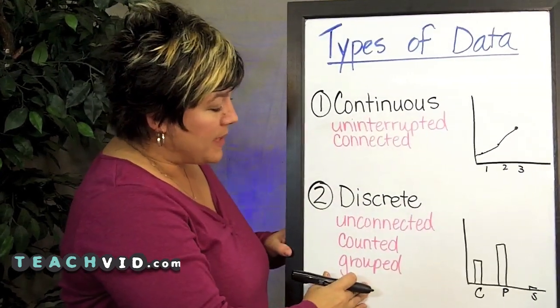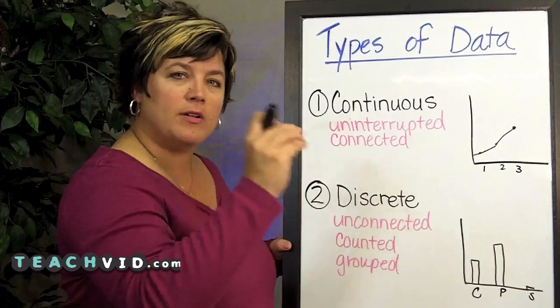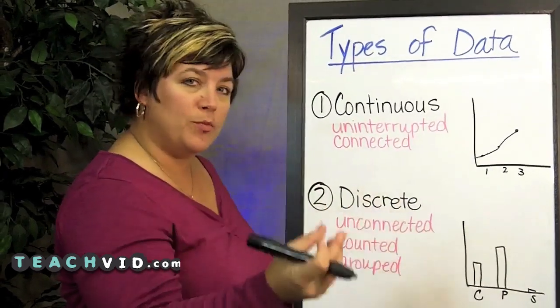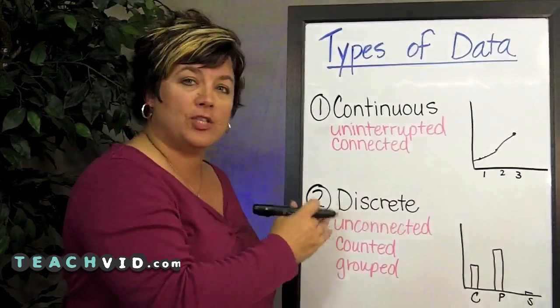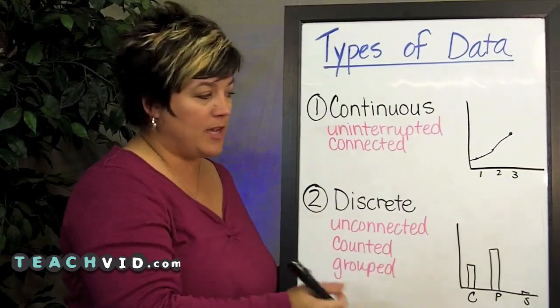If you're looking at something and thinking, could I count each part of this data? Is each part a different part that's been counted or is it grouped in some way? You've got discrete data and you would use a bar graph to help you with that one.